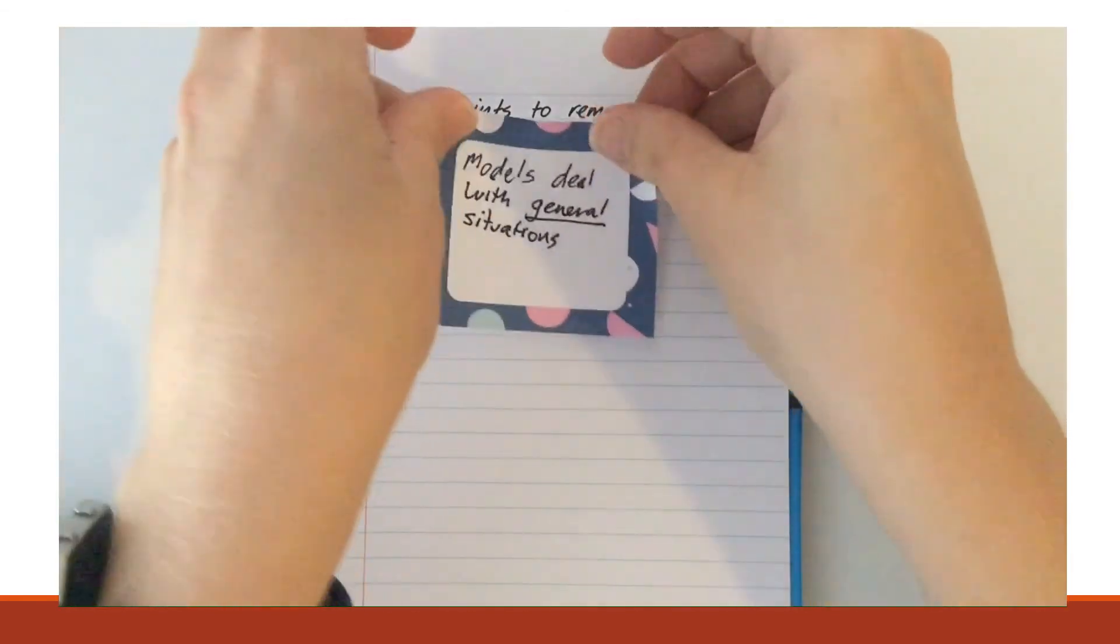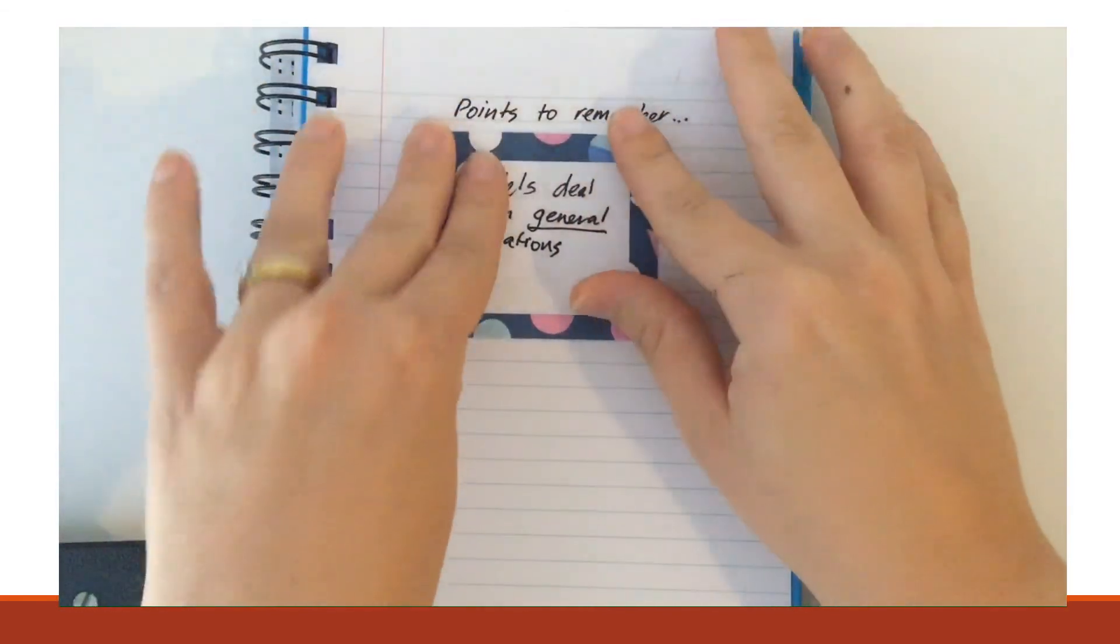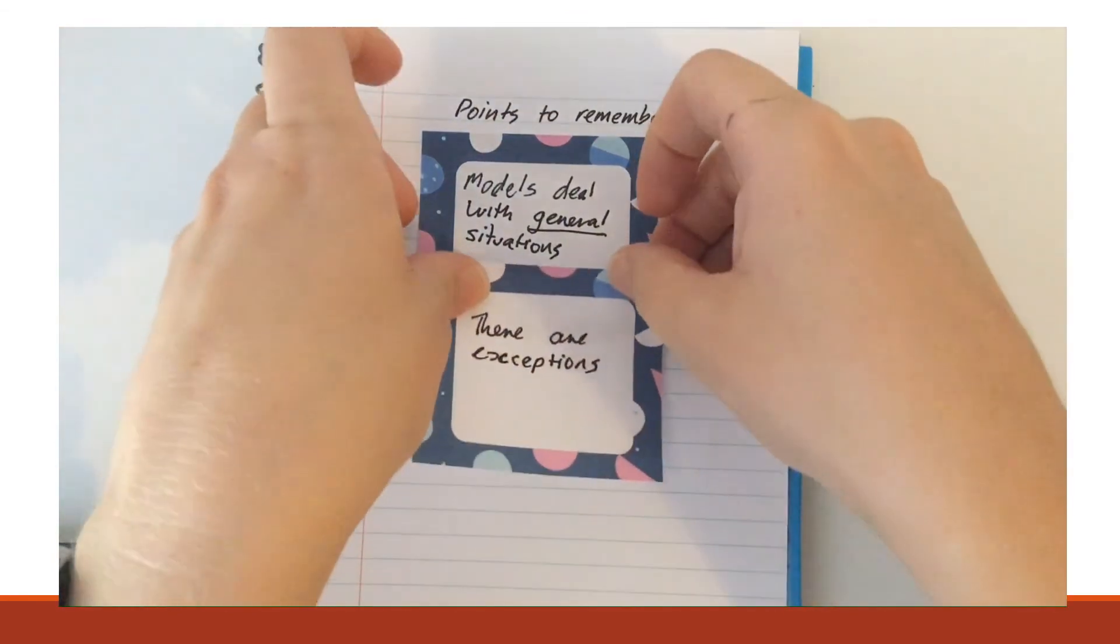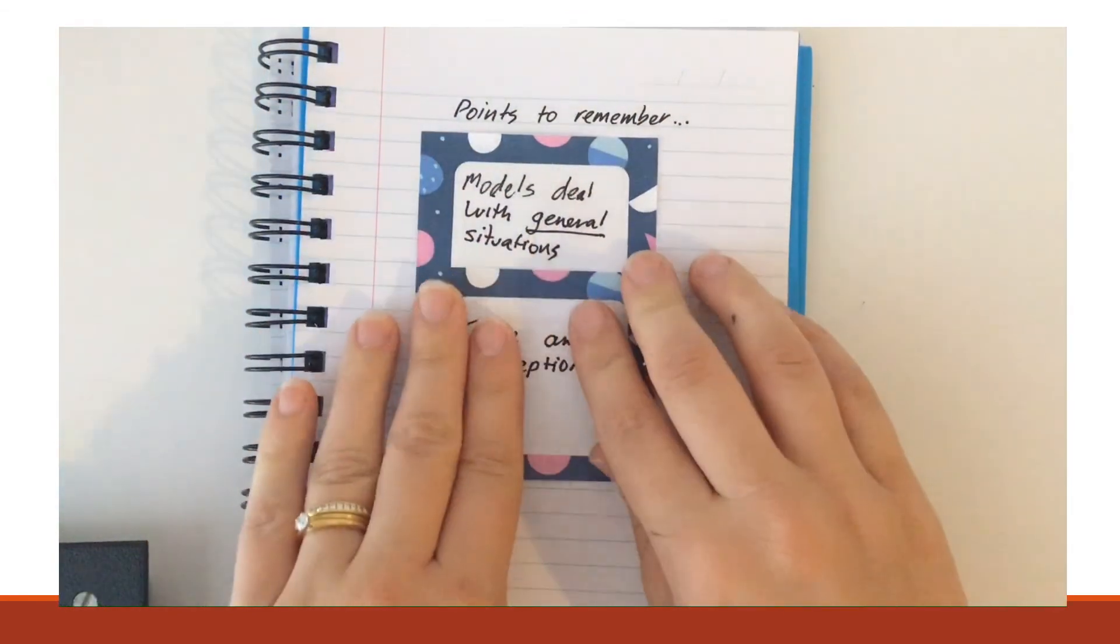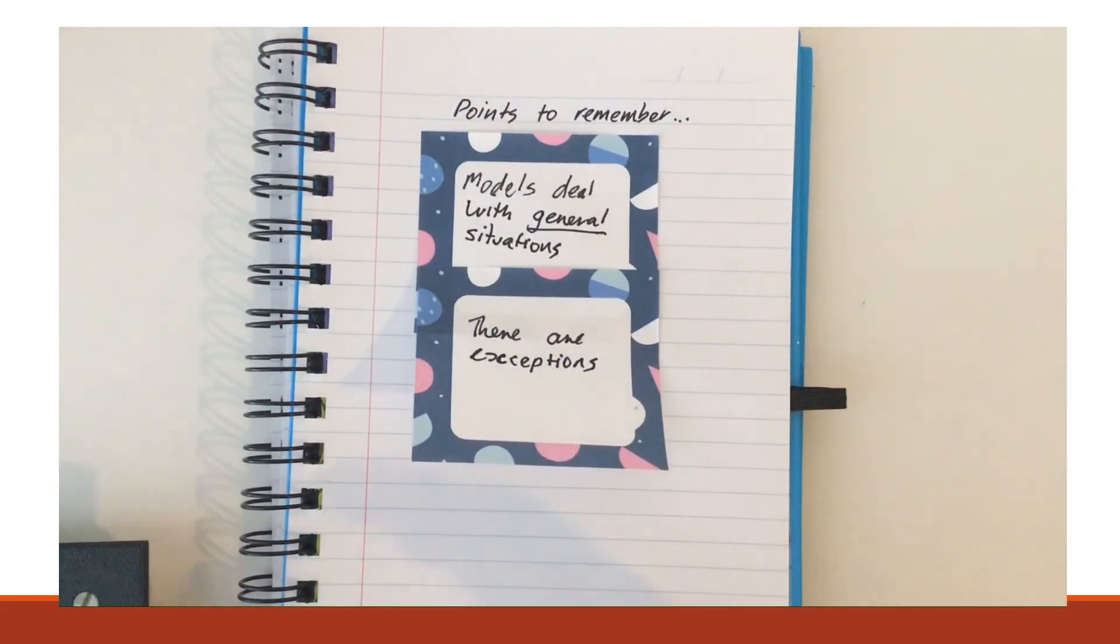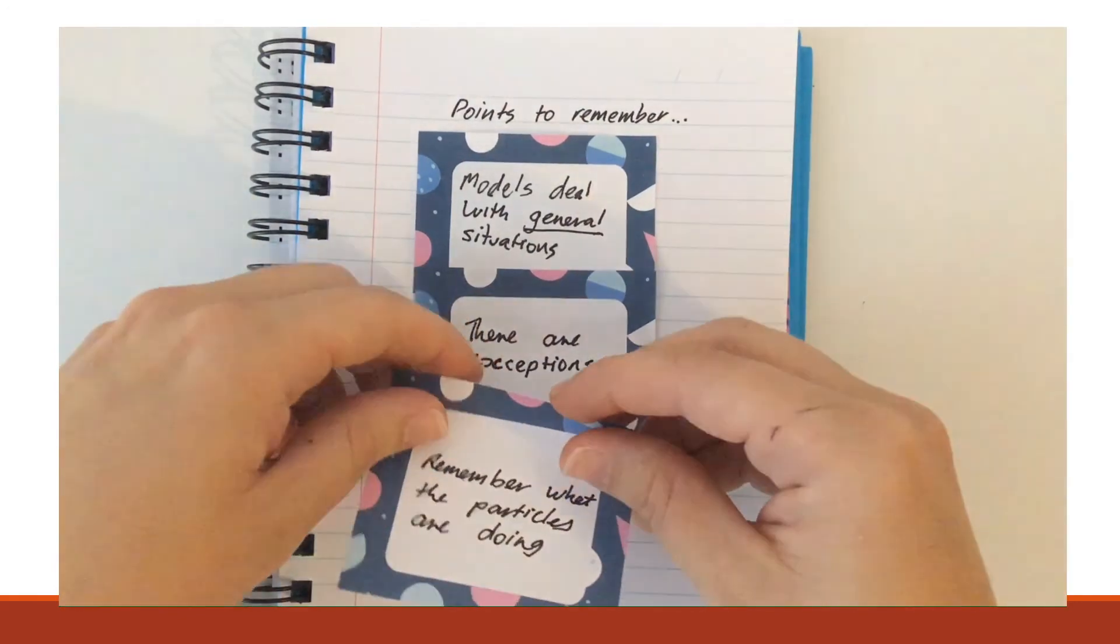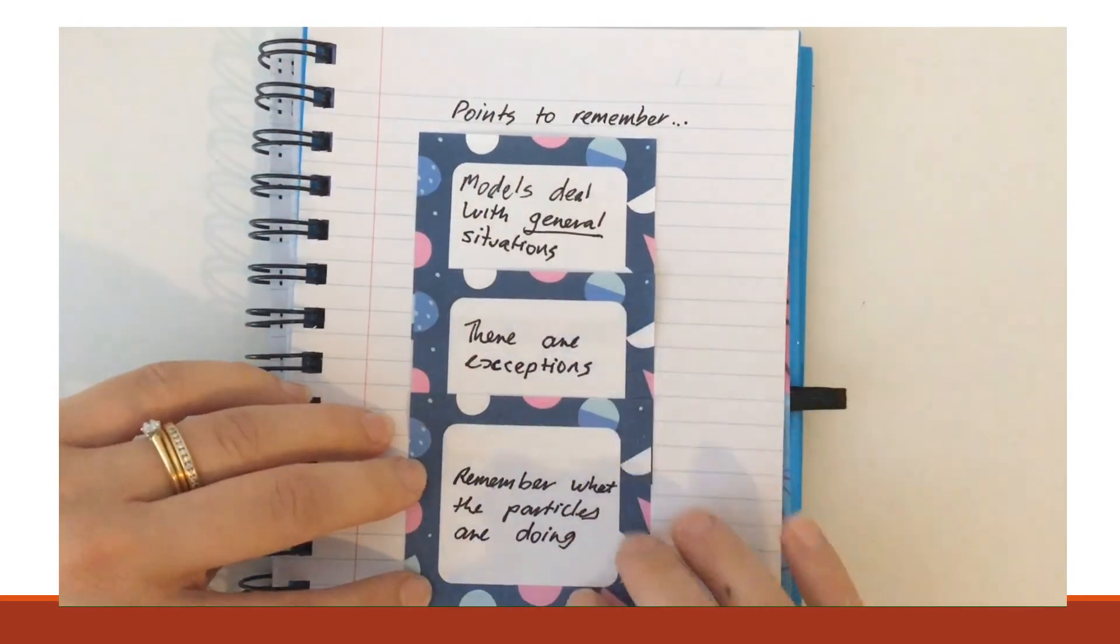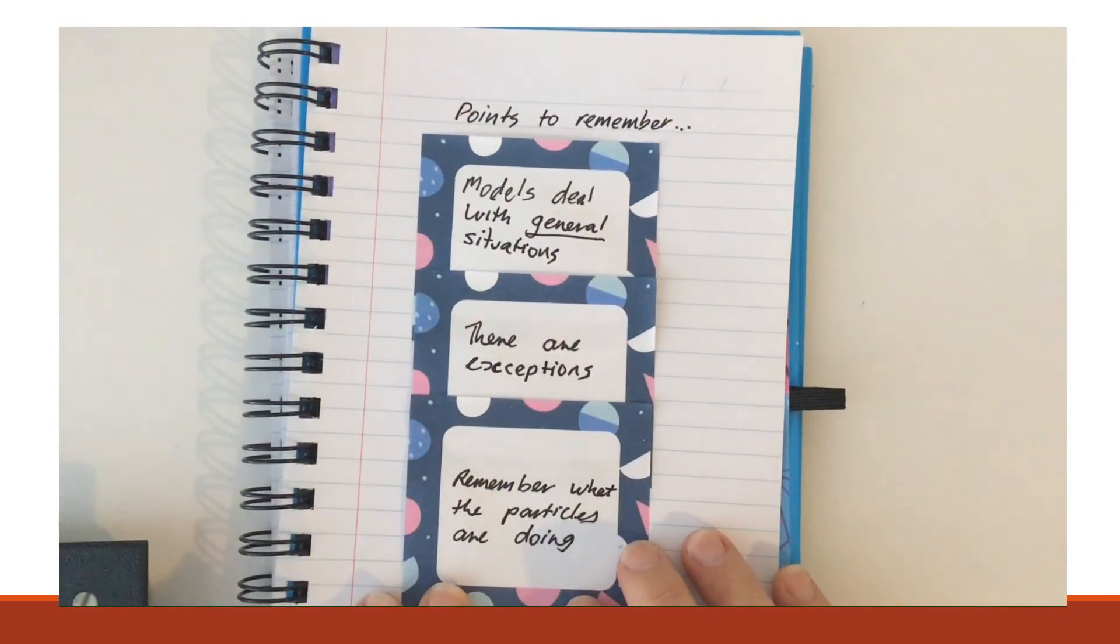Points to remember. Scientific models deal with general situations. There are exceptions and there are rules which don't apply to all substances or in all situations, but models help us to understand what's going on most of the time. When trying to work out what's going on with physical state changes, try and remember what the particles are doing.